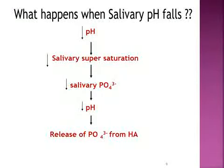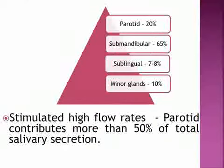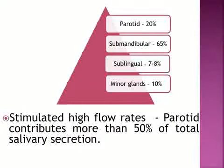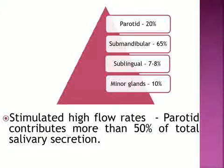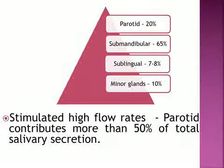The major contribution to salivary flow comes from the submandibular gland, which contributes approximately 65% of the salivary flow at rest, followed by the parotid, sublingual, and minor glands. In stimulated flow, the parotid contributes more than 50% of total salivary secretion.